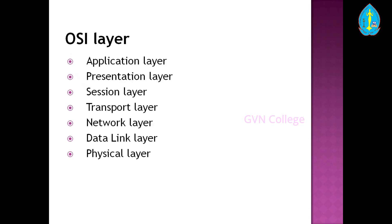The OSI layers from top to bottom are: application layer, presentation layer, session layer, transport layer, network layer, data link layer, and physical layer. Physical layer, data link layer, and network layer are the three lower-level layers. Application layer, presentation layer, and session layer are the higher-level layers. Transport layer is the mid-level layer — it transports communication between the upper and lower layers.